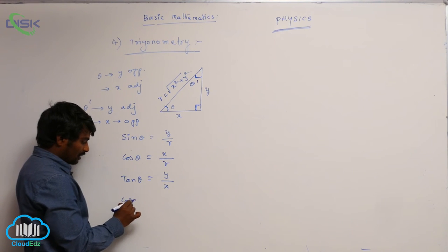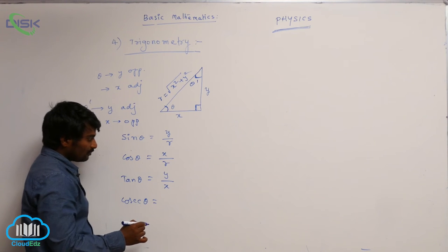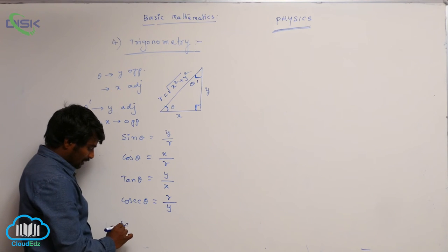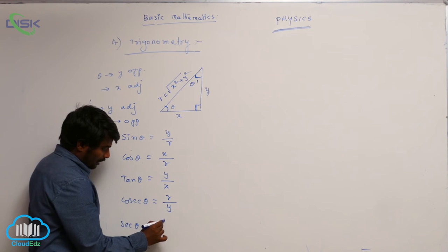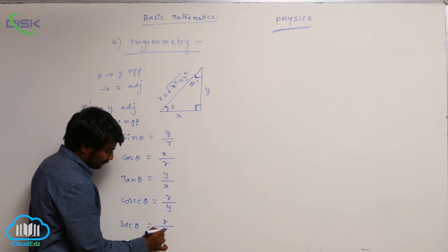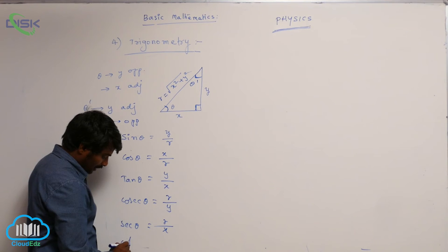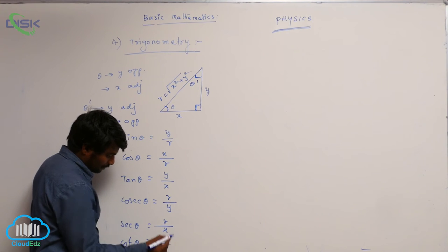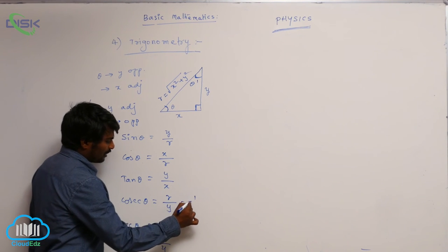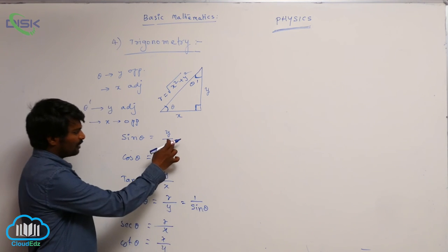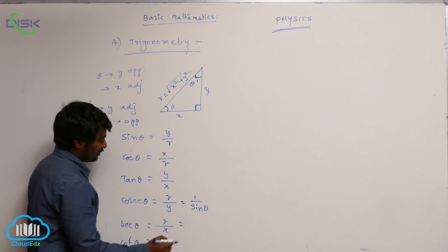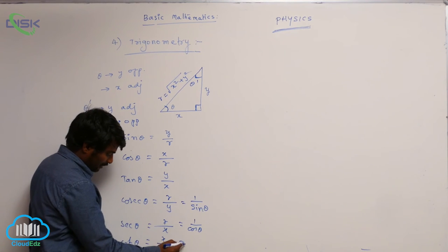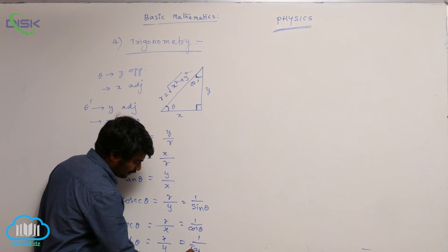Cosecant theta equals hypotenuse by opposite side, and secant theta equals hypotenuse by adjacent side, and cot theta equals adjacent side by opposite side. You can write cosecant as 1 by sin theta, and secant as 1 by cos theta. From this, cot theta you can write as 1 by tan theta.